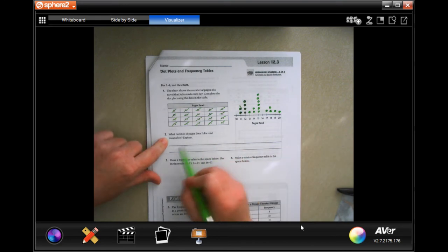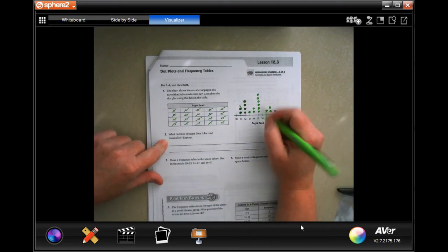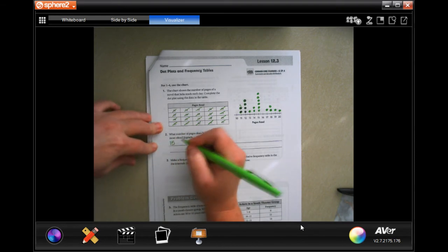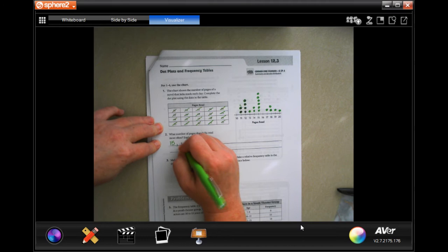Just ignore that little mark. What number of pages does Julia read most often? 15, because that's where the most data points are. So 15, it has the tallest stack of dots.